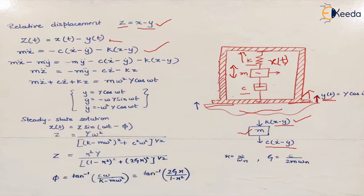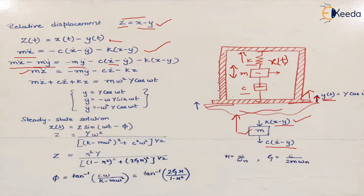The total force acting on the body gives us mẍ = −c(ẋ − ẏ) − k(x − y). If we subtract mÿ from both sides and take m as common, we introduce z = x − y, so ż = ẋ − ẏ and z̈ = ẍ − ÿ. This allows us to replace terms: mẍ becomes mz̈, (ẋ − ẏ) becomes ż, and (x − y) becomes z, giving us the simplified equation of motion.